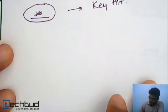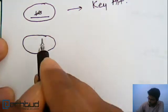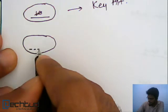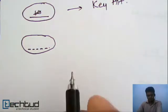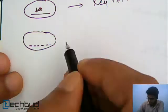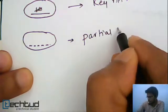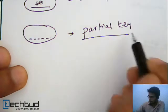Another one you will see is ellipse underlined but with dotted line. Okay. So, this is basically partial key. Okay. This is again a new term. We will understand it later.